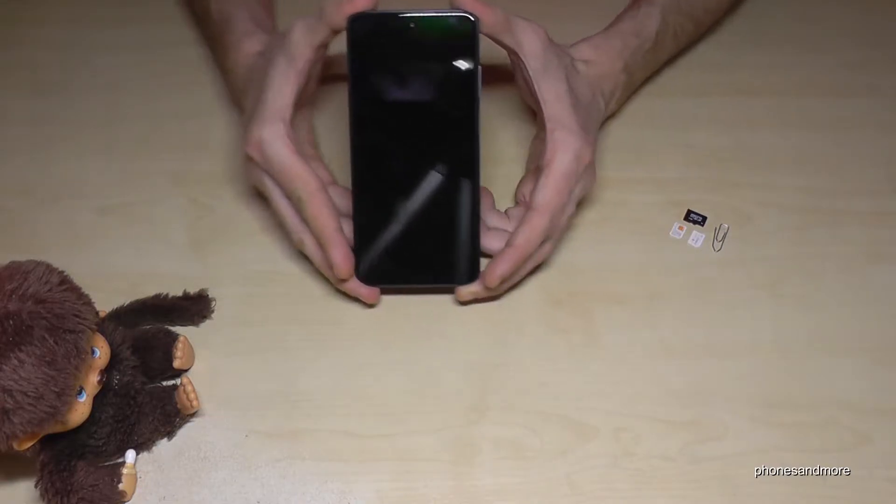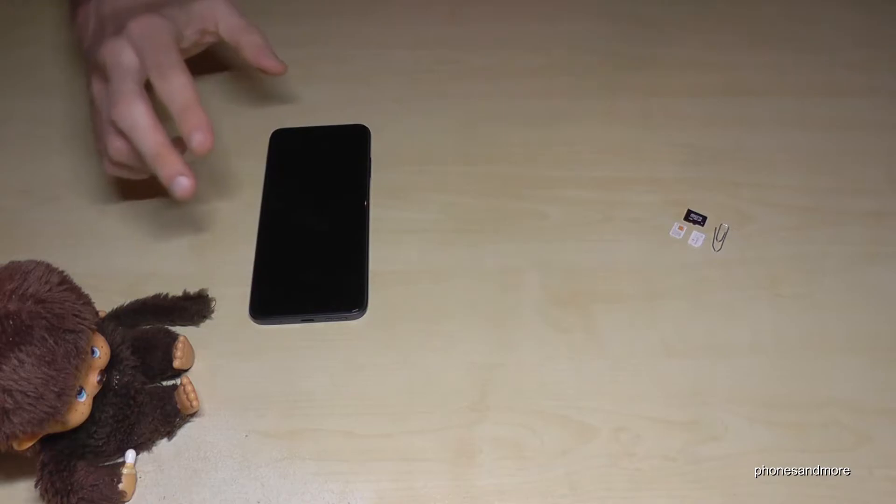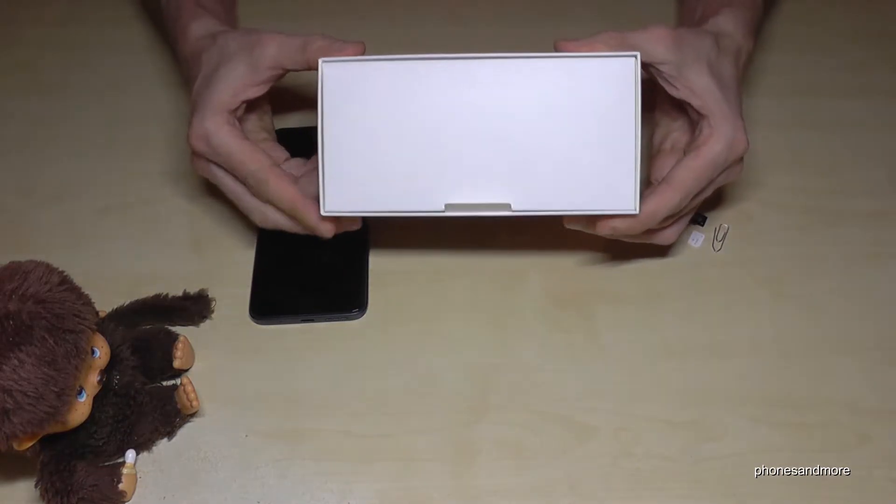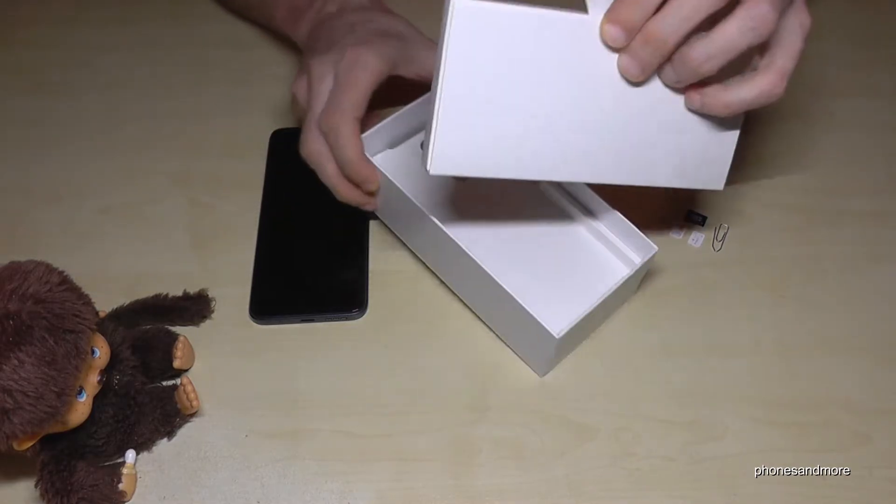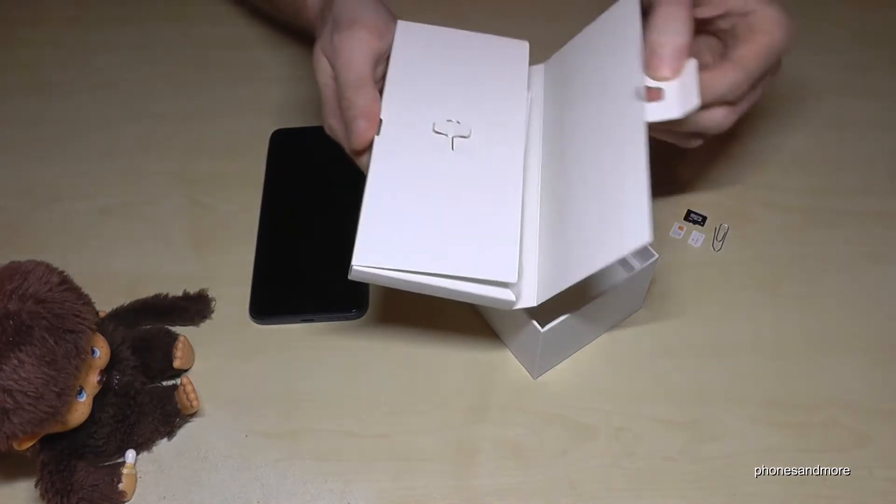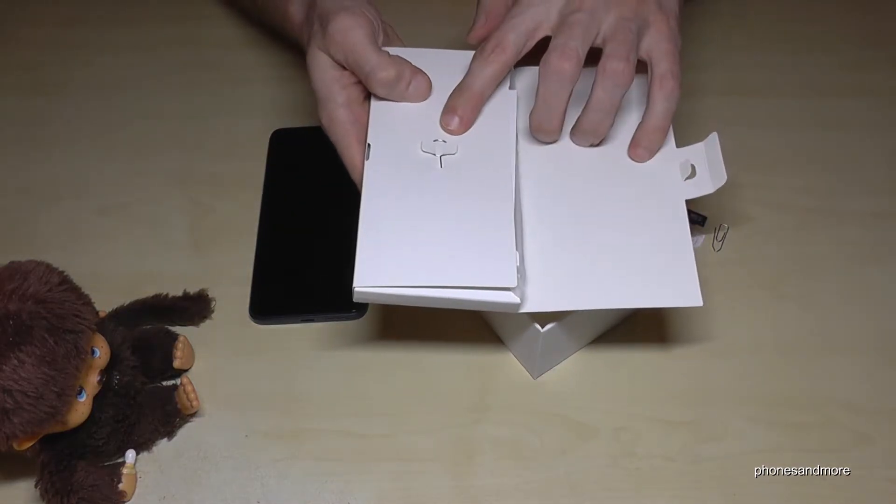So what we will need is next to the phone this SIM injection tool and it is part of the box. In that box there is another white box, so just remove it like this here and if you open the box you will find the SIM injection tool at this place.